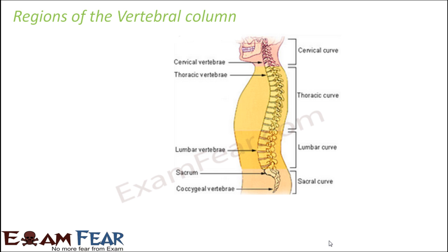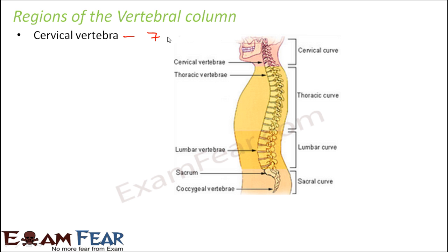Now let us look at the different regions of the vertebral column. The regions are named based upon where they are located. The first region is the cervical vertebra. The topmost region of the vertebral column is known as the cervical curve, and this region has a total of seven vertebrae.